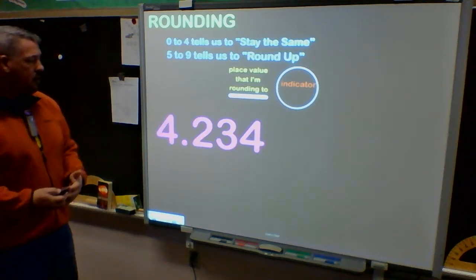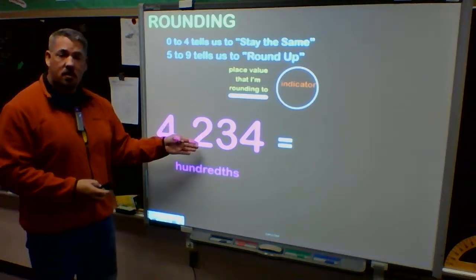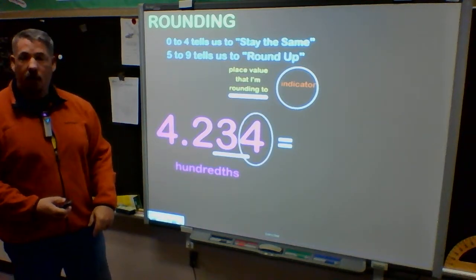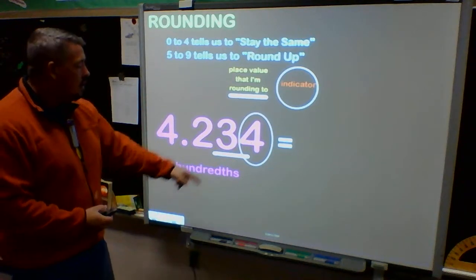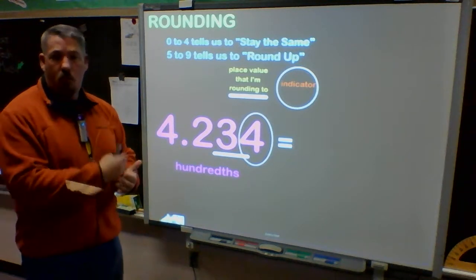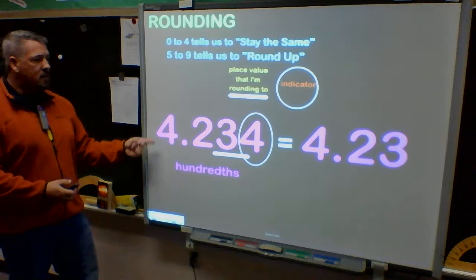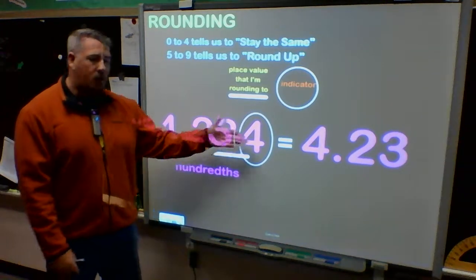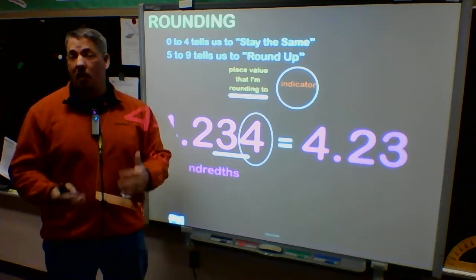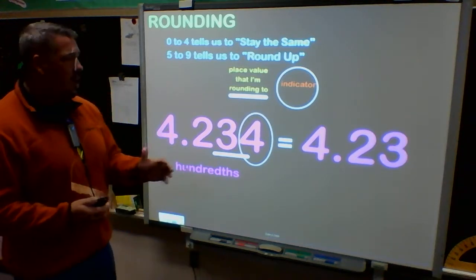If I have decimal numbers and it tells me to round to the nearest hundredths, I have to know my decimal place values: tenths, hundredths, thousandths. For the hundredths position, I underline the three. My indicator is always to the right, so I circle it. The four tells me to stay the same, so my three stays the same and everything in front stays the same. Since it's a decimal, the four drops off — we don't have extra zeros at the end of decimal numbers. That's going to be important on the I-STEP test and NWEA and in middle school.